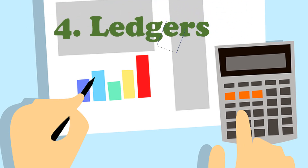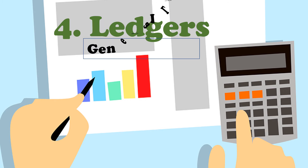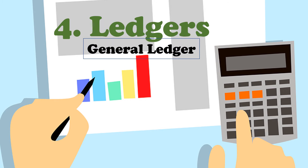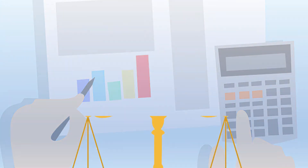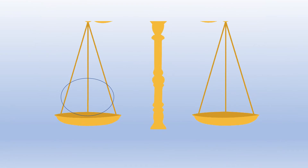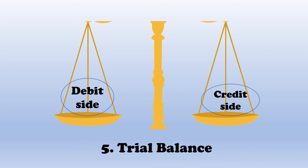The next thing is that information must be posted to the ledger accounts. The fourth stage in the accounting cycle is ledgers, of which one example is the general ledger with individual accounts. The information will then be transferred to a trial balance.